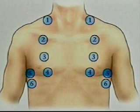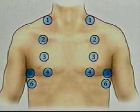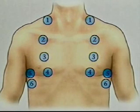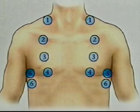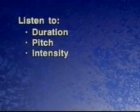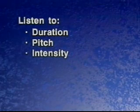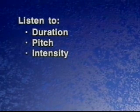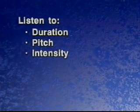To auscultate the anterior chest, take the same systematic approach you used for percussing the anterior thorax. If necessary, gently displace the patient's breasts to auscultate all important areas. Listen to the duration, pitch, and intensity of the inspiratory and expiratory sounds.